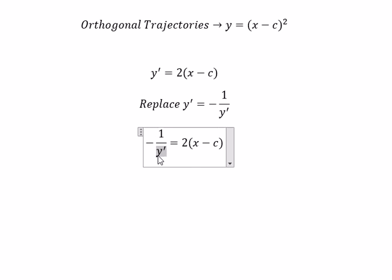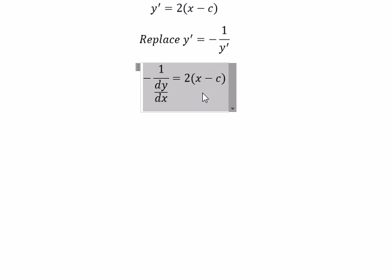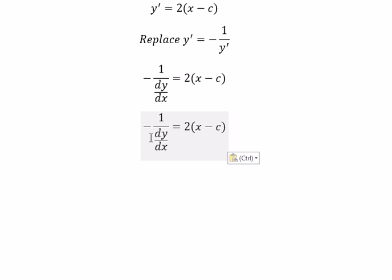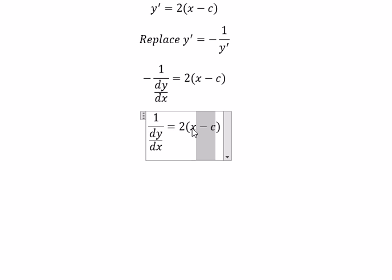We can express this as dy over dx. We have the negative, so we can change this to c minus x. We get dx over dy.